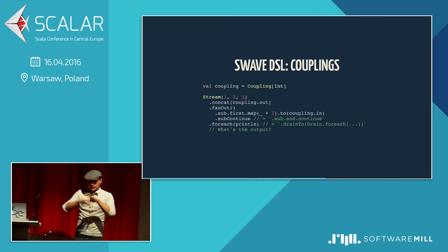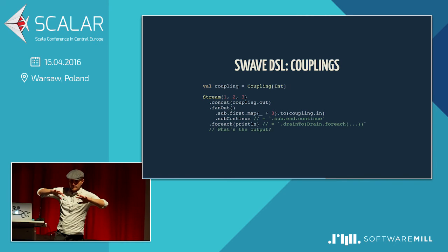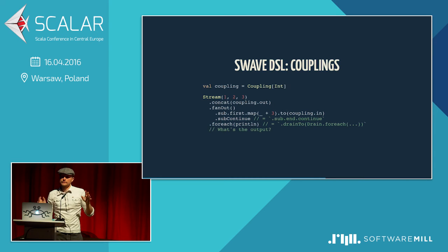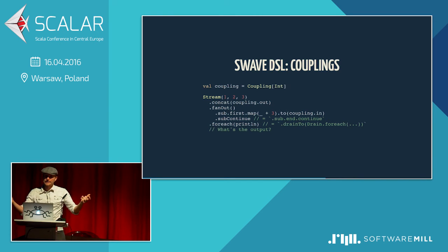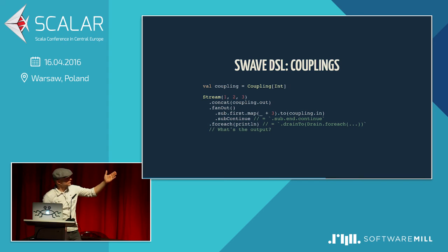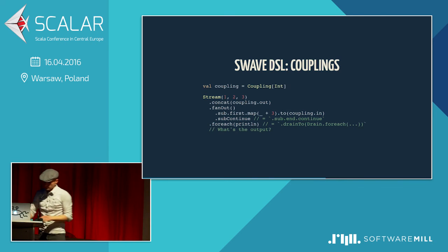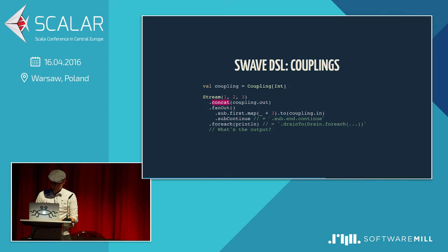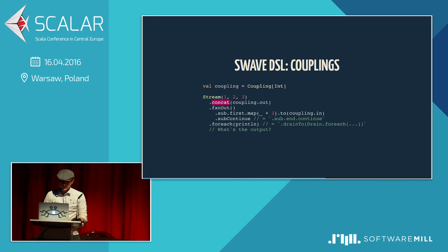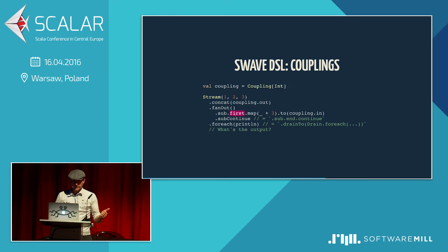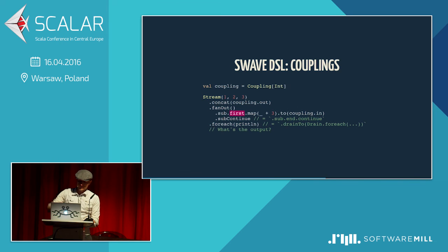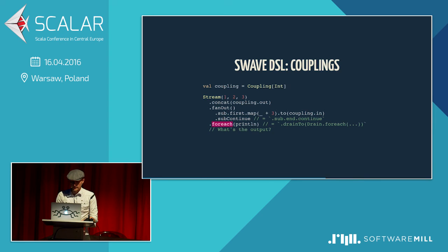Everything we've seen gives quite a lot of opportunities for constructing graphs, but it's not generally possible to build all kinds of graphs. If you want to be completely general, you need something like a coupling — where you can plug two things together. For example, we have a stream of 1, 2, 3 and then `concat` (just another name for fan-in) with the output of a coupling. Then we fan-out, take the first sub, take the first element, afterwards cancel, map, and feed that back into the coupling. So we generate a loop.